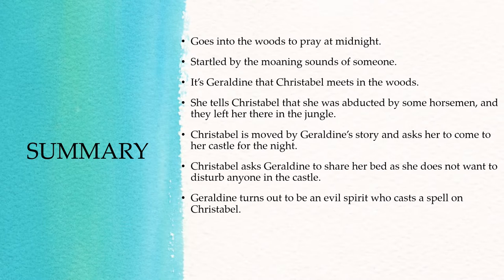While Christabel is in that room alone with Geraldine, she realizes that Geraldine is actually not a damsel in distress. She turns out to be an evil spirit and she casts a spell on Christabel. She undresses herself and asks Christabel to undress herself and then embraces Christabel.